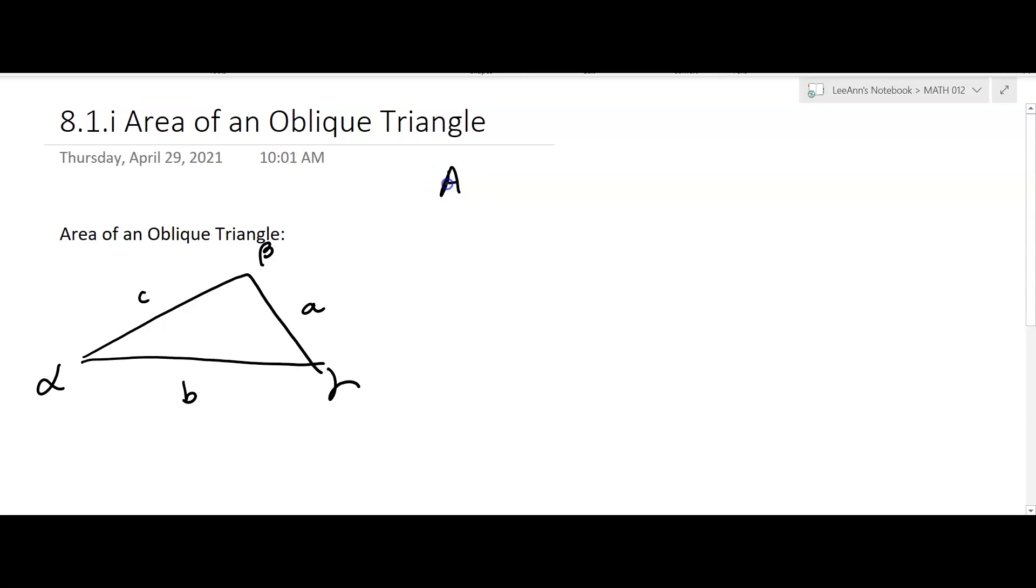how to find the area of a triangle. The area of a triangle is one-half the base times the height. Somewhere in your past algebra they taught you that. So let's go ahead